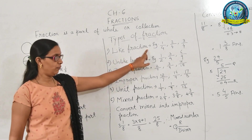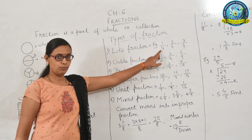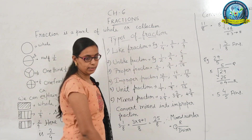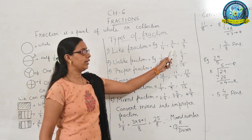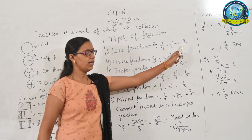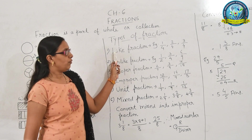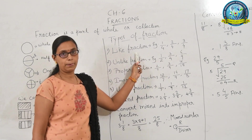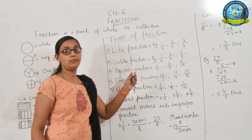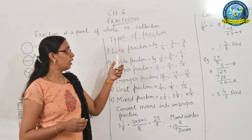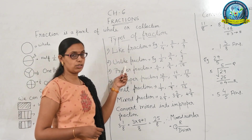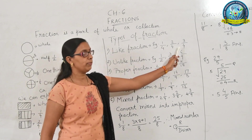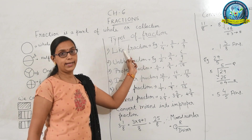Example of like fractions: here are 1 upon 4, 2 upon 4 and 3 upon 4. All the denominators are same — because all the denominators are 4. So when the denominators are the same, the fractions are called like fractions. We use like fractions when we compare fractions — jab fractions ke beech comparison karna hota hai, tab hum like fractions use karte hain.